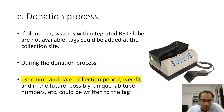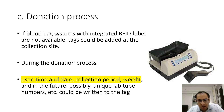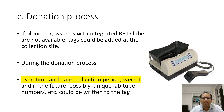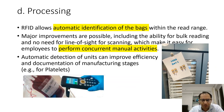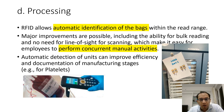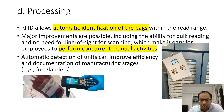During the donation process itself, where blood bag systems with integrated RFID labels are not available, tags can be added at the collection site. You can monitor the user, the time and date, and the collection period — all of that can be stored in that RFID chip. During processing, it allows automatic identification of bags within read range, enables concurrent manual activities, and provides automatic detection of units that can improve the efficiency and documentation of manufacturing stages.